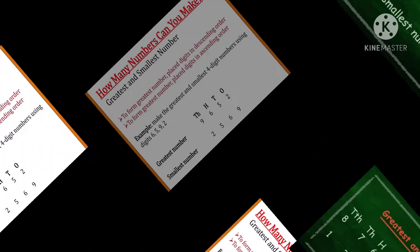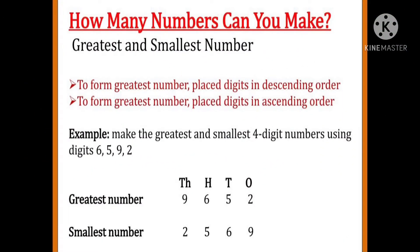Now let us discuss one more example. To use digits 6, 5, 9, and 2, make the greatest number. That will be 9,652 because we have written the digits in descending order. Writing the number in smallest form, we have to write in ascending order, so 2,569.